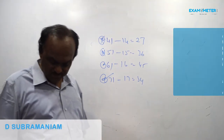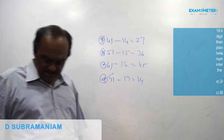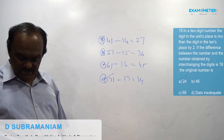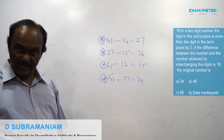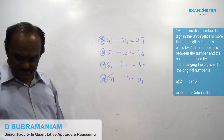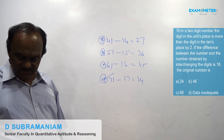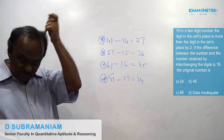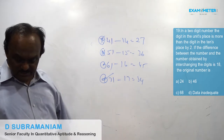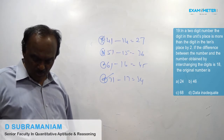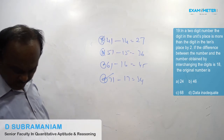Nineteenth problem: In a two-digit number, the digit in the units place is more than the digit in the tens place by 2. If the difference between the number and the number obtained by interchanging the digits is 80, what is the original number?